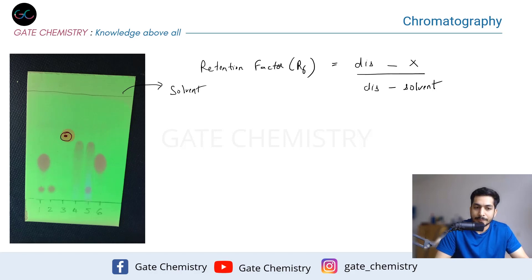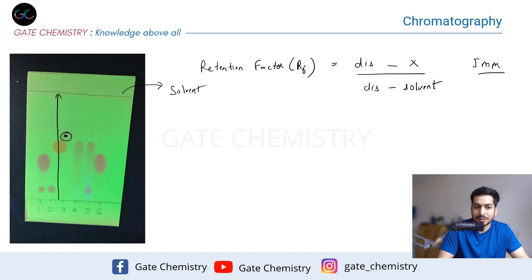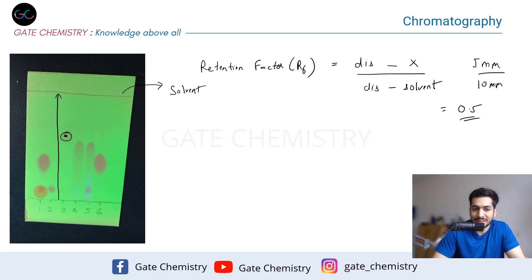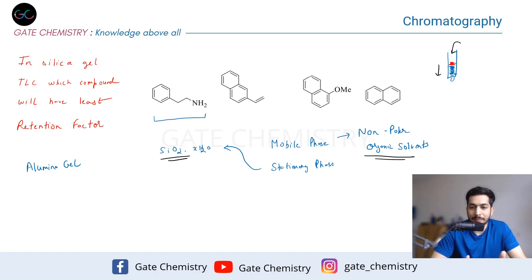If compound number three has traveled, say, 5 mm and the solvent has traveled 10 mm, then Rf = 5/10 = 0.5 — unitless, since the millimeter units cancel. So the Rf value for compound three is 0.5. Compound one is a mixture showing two spots with different Rf values. That is how you calculate the retention factor.